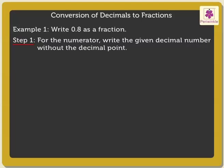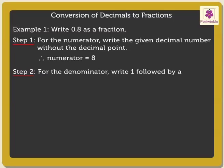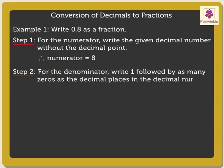So here we write the number 8 as the numerator. Step 2: For the denominator, write 1 followed by as many zeros as the decimal places in the decimal number. So first we write 1 in the denominator, then write a single 0 in the denominator since there is only one decimal place in the decimal number.